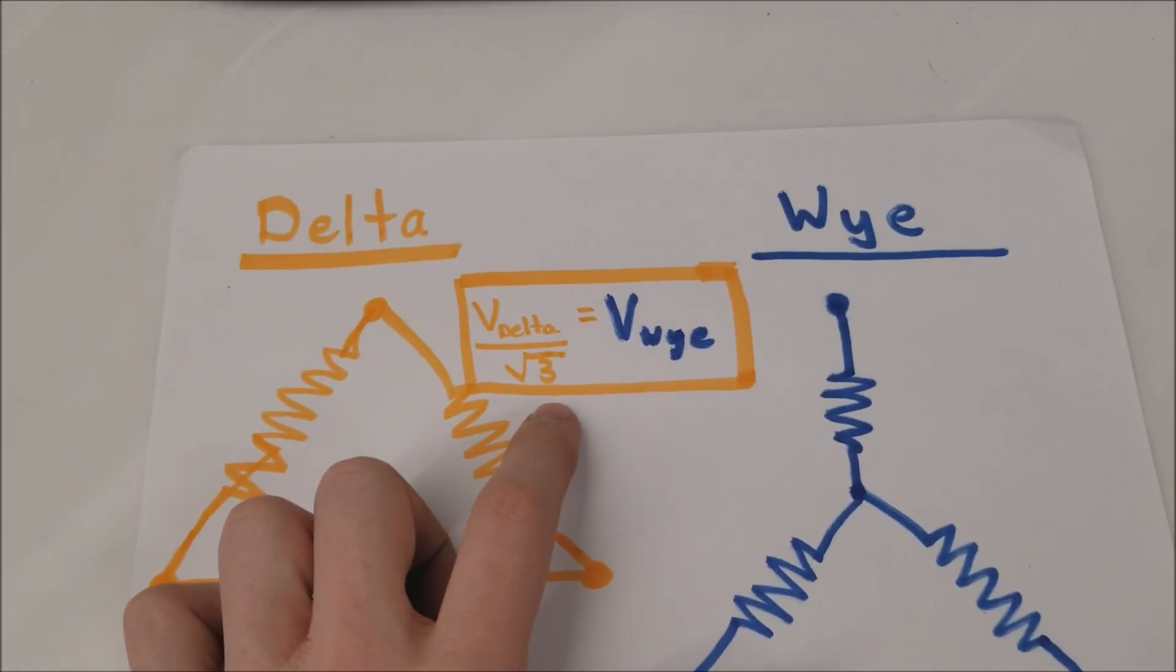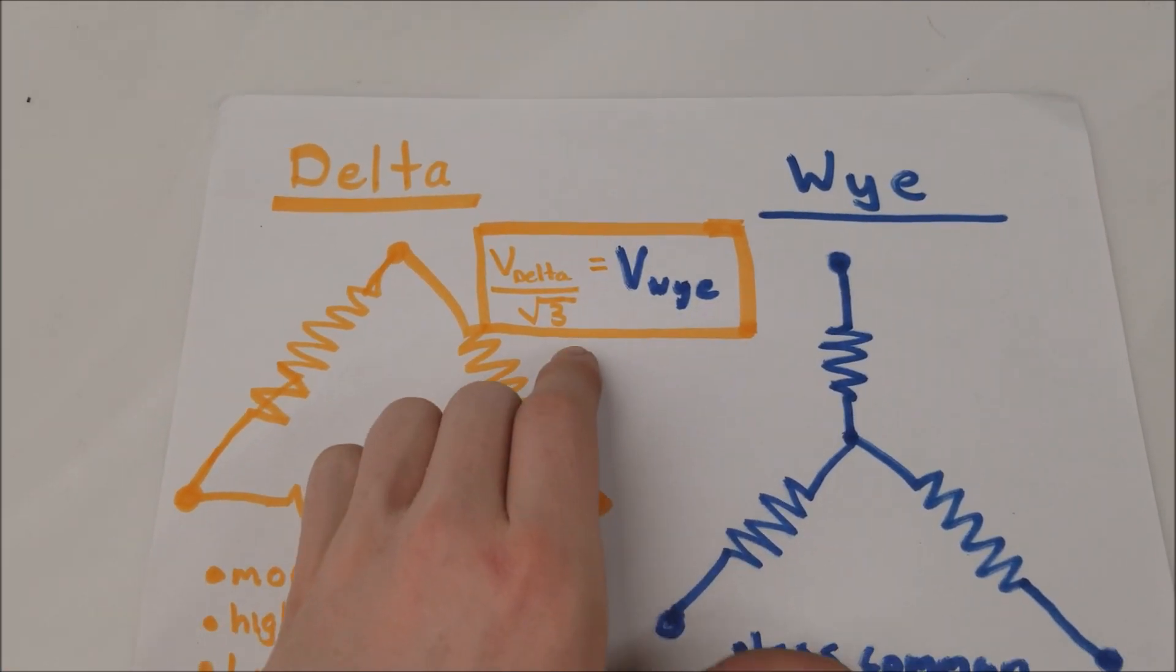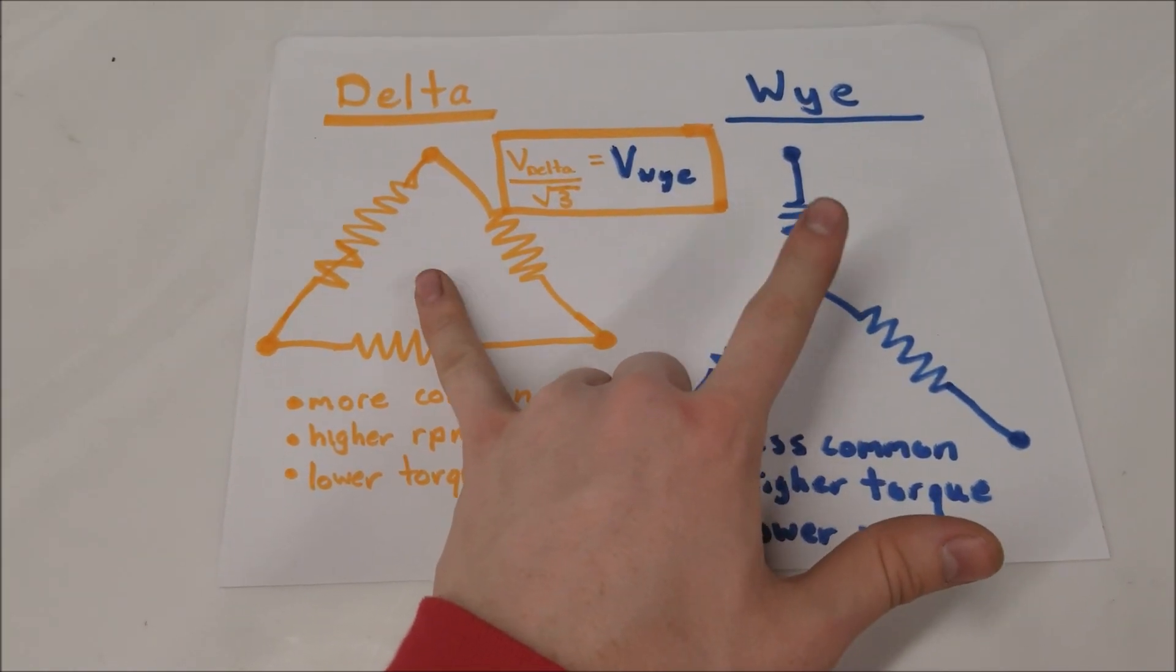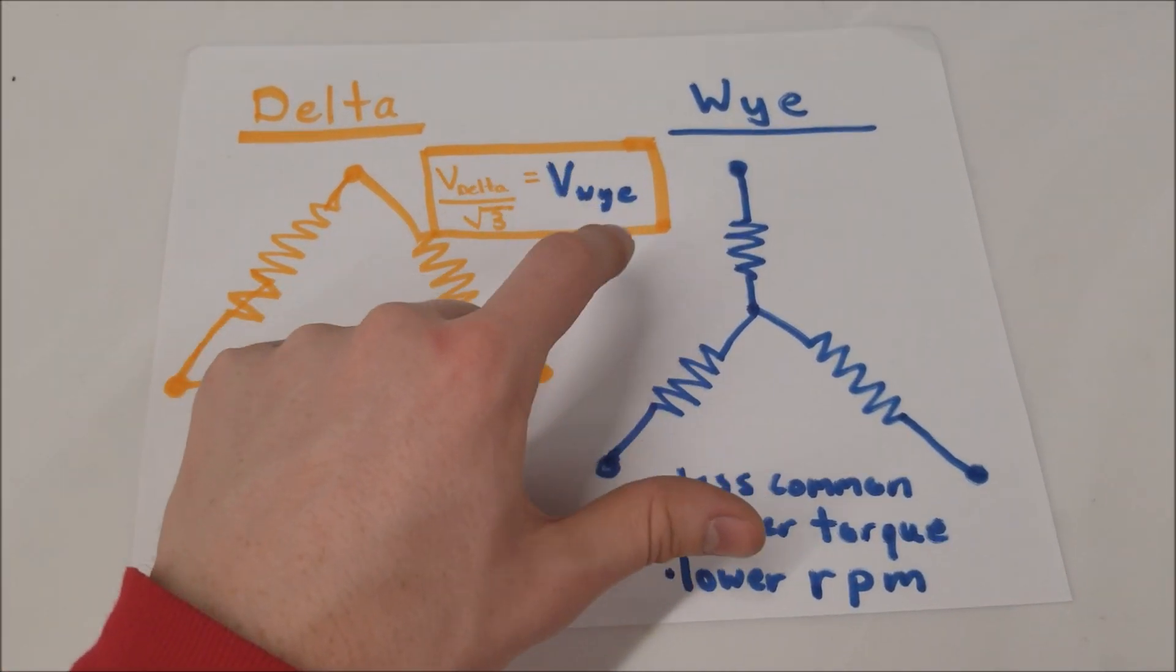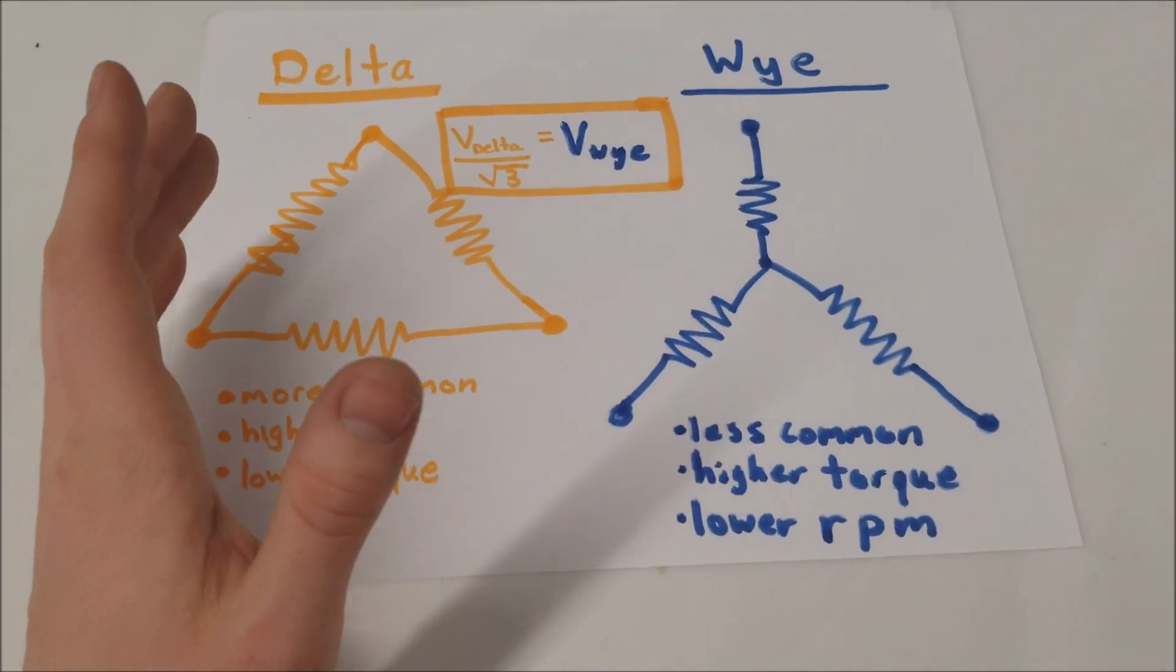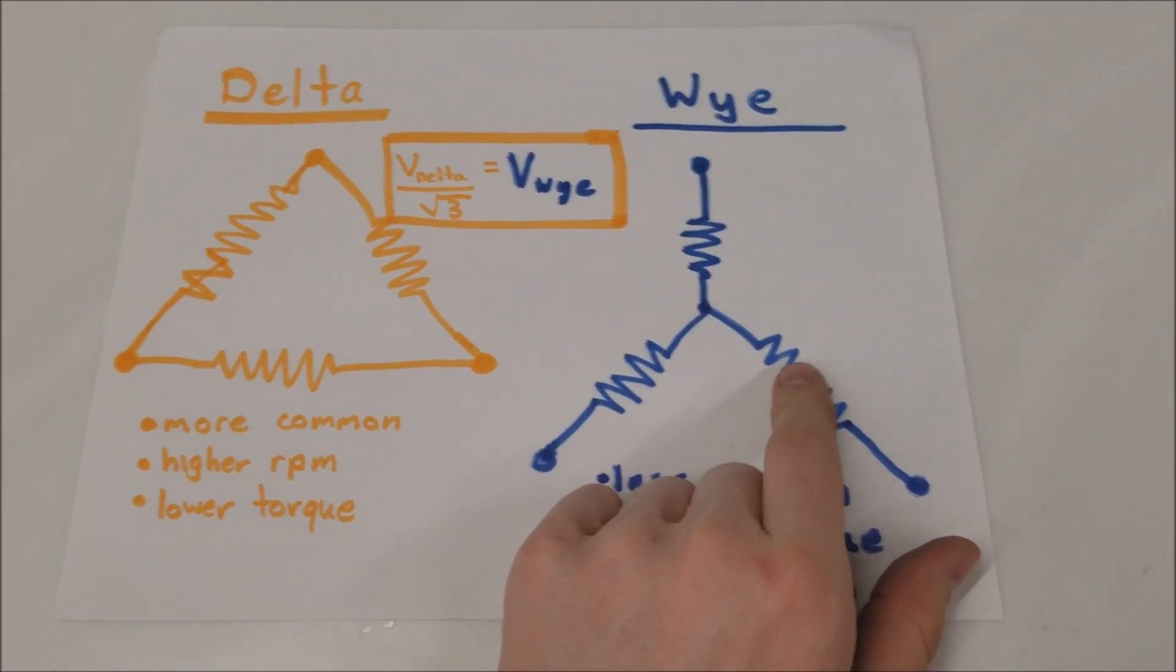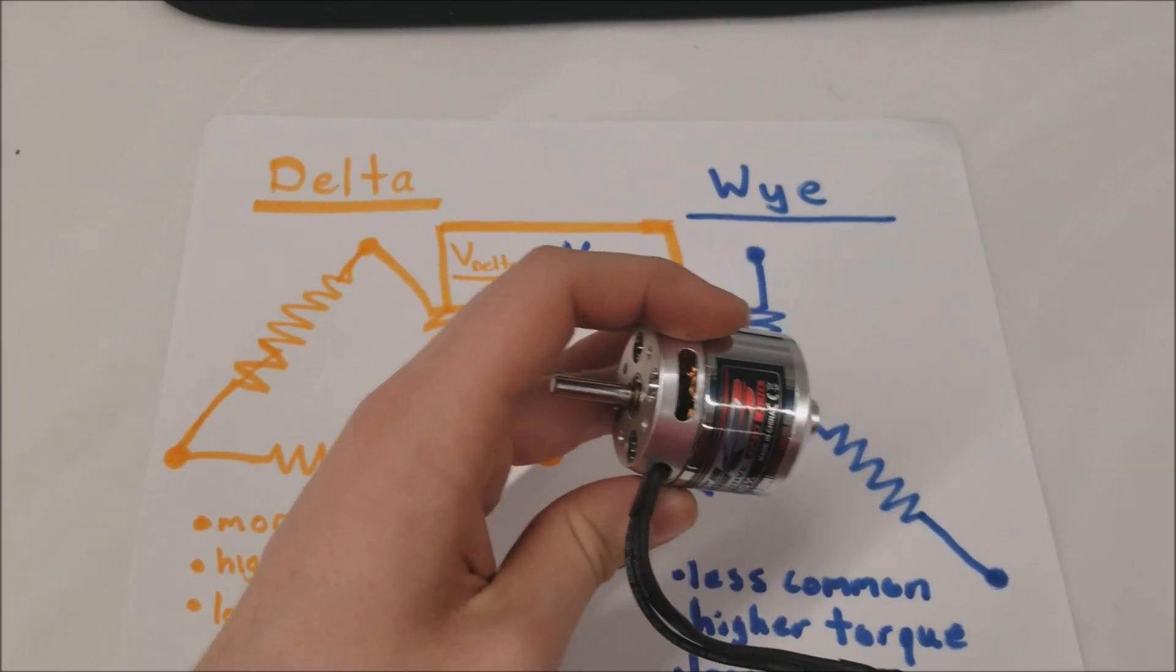The formula that is very important is that the voltage across the Delta phase over root 3 is equal to the voltage across the Y phase. So if you multiply this to this side, your Y is going to be having a lower voltage, but that contributes to a lower RPM. But because the power is the same in both motors, assuming you use the same power source when you change the winding, your current will go up and your torque will be higher. You're exchanging torque for RPM, and the factor by which that changes is root 3. So if you have a 500 kV motor, then 500 times root 3 will be the kV of your new motor. And I'm going to show you this using real data on the RPMs that this outputs in Delta phase winding versus Y winding.